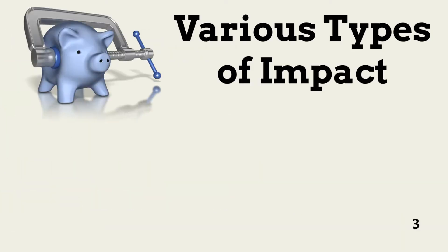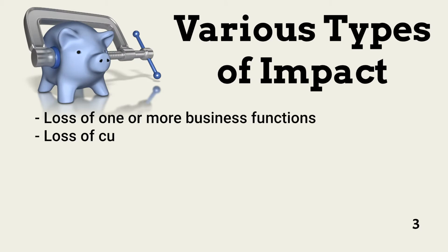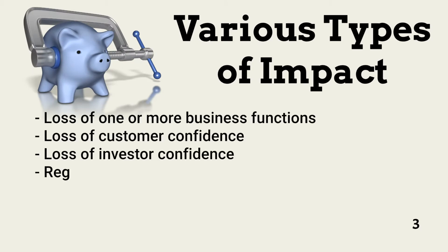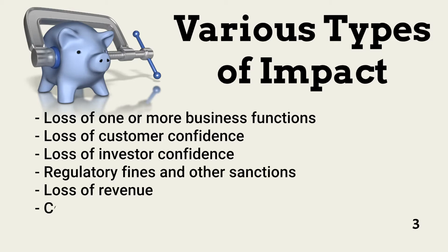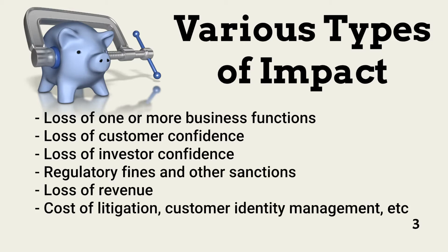A BIA must address different types of impact. The type of impact depends on the type of event. Business impact focuses on human welfare and cost to the business. Examples include loss of one or more business functions,